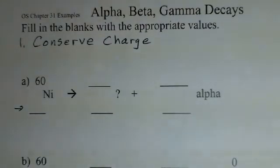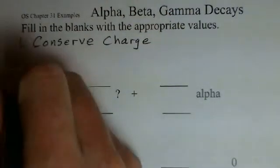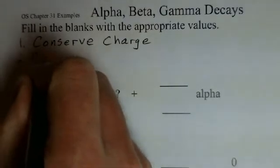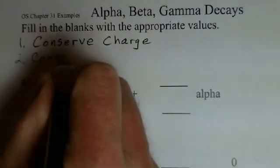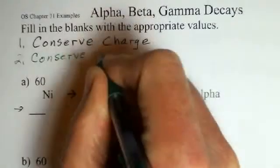Second rule is we have to conserve the count of nucleons, and that's our top number, 60 in this case.